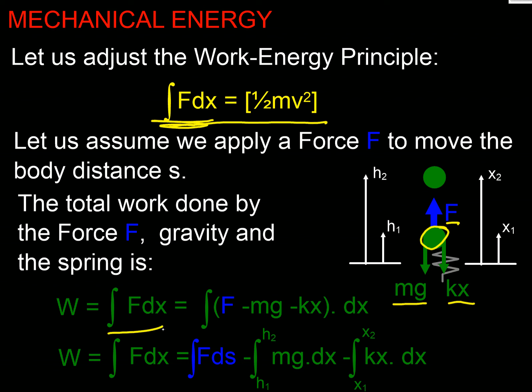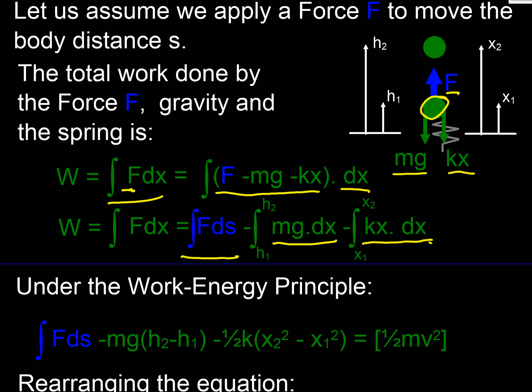The work done in this case is going to be our resultant force — here's our resultant force: F upwards, mg and kx downwards — integrated over the distance. That's our fundamental principle. If I break that integral up into its three constituent parts, I've got the force I've applied (the blue force) and the distance traveled, so that's the work done by that force. Next I've got the work done by gravity, which is absorbing energy as it goes up, so it's negative. And I've got the work done by the spring, which is also absorbing energy, so that's negative too.